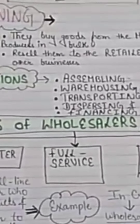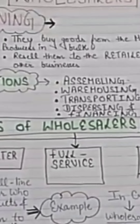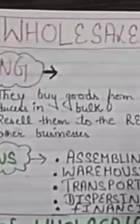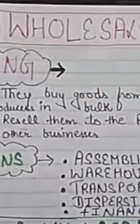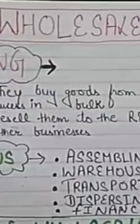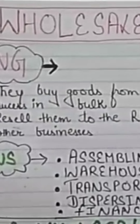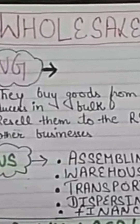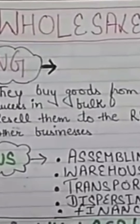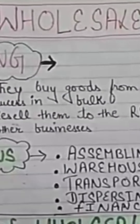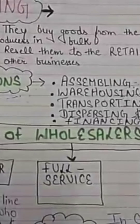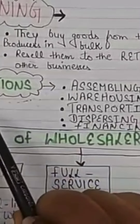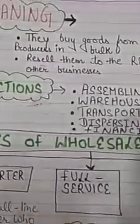Good morning everyone. Continuing with the same chapter, Channels of Distribution, today's topic is wholesalers. Wholesalers are those who buy goods from manufacturers or producers in bulk and resell them to retailers or other businesses in small lots. Now let's look at the various functions performed by the wholesaler.